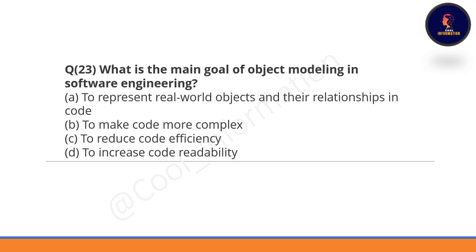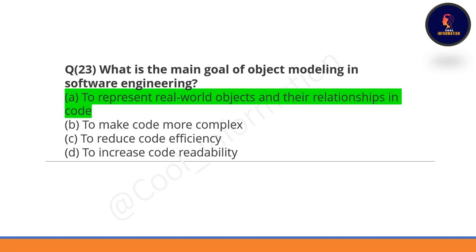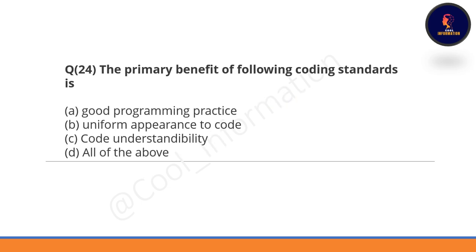Question 23: What is the main goal of object modeling in software engineering? Option A is 'to represent real-world objects and their relationships in code,' Option B is 'to make code more complex,' Option C is 'to reduce efficiency,' Option D is 'increase code readability.' Although A and D were confusing, the correct option is A — to represent real-world objects and their relationships in code.